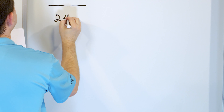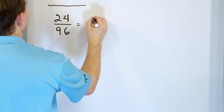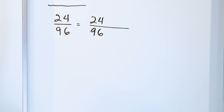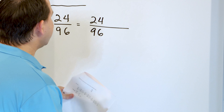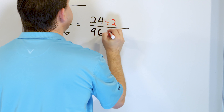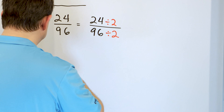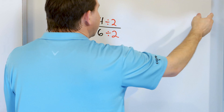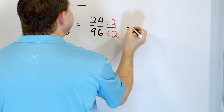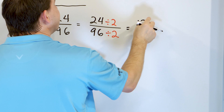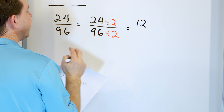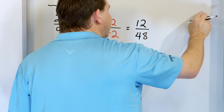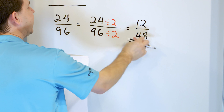What about twenty-four over ninety-six? I write twenty-four and ninety-six. I don't know exactly the best number to divide by, but I know they're both even. So I'll divide the top by two and the bottom by two. Twelve times two is twenty-four, so the top becomes twelve. Ninety-six divided by two works out to be forty-eight. But this is not perfectly simplified because these are again even numbers.